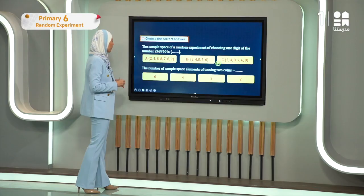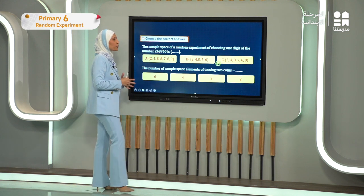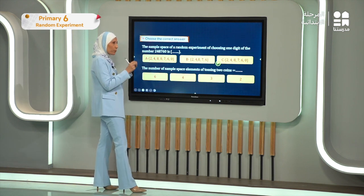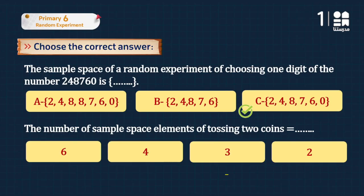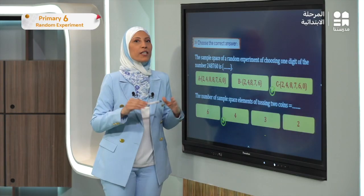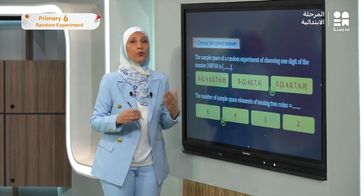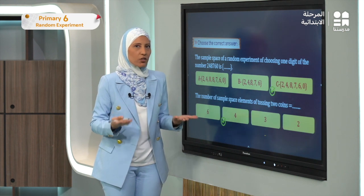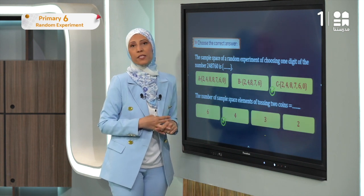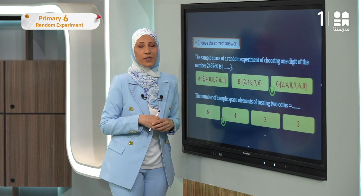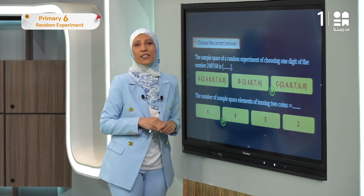The number of sample space elements when tossing two coins: each coin gives head or tail, so the outcomes are HH, HT, TH, TT, and n(S) = 4. We have explained the meaning of random experiment, the difference between random and non-random experiments, the meaning of sample space, and how to find n(S). I hope you understand every point — see you next time!